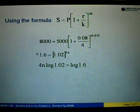So next step, we use log. We put log on the left side and then log on the right side. So we have log 1.02 to the power of 4n. According to the formula, we can take out the power 4n outside here. So we will get 4n log 1.02 equals to log 1.6.